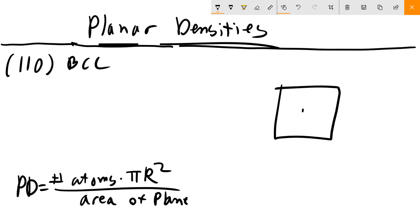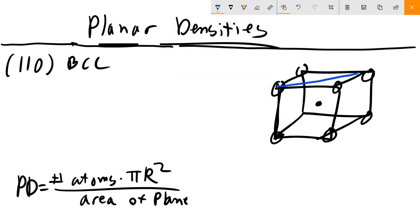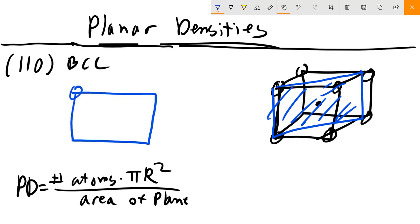So let's do 110 in BCC. Draw it over here as usual. Here, here, here, here. And our central atom. So let's get a different color to kind of show the plane. This, this, this, this, this. Again, do our projection. And now we have here, here, here, here, and here.